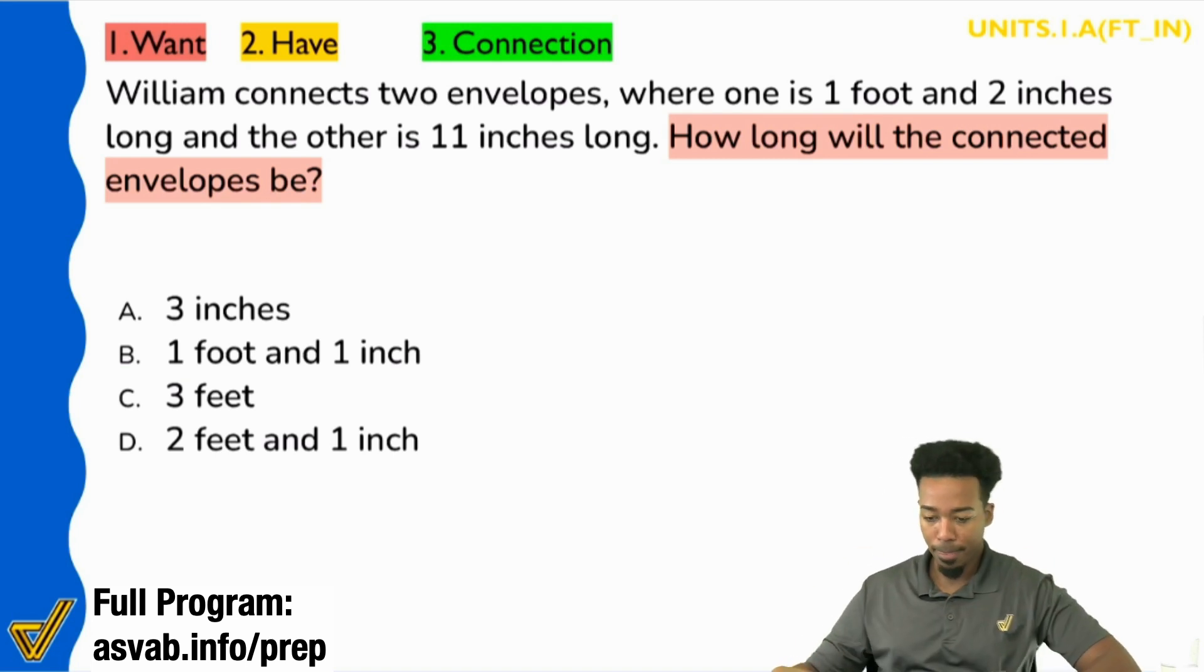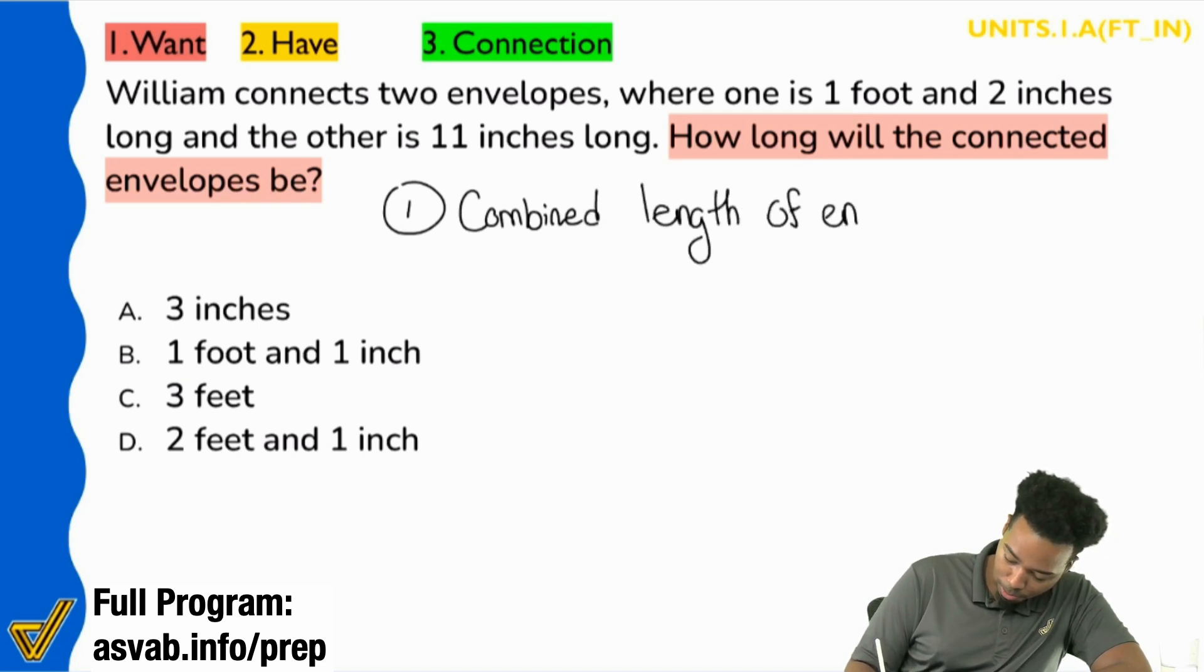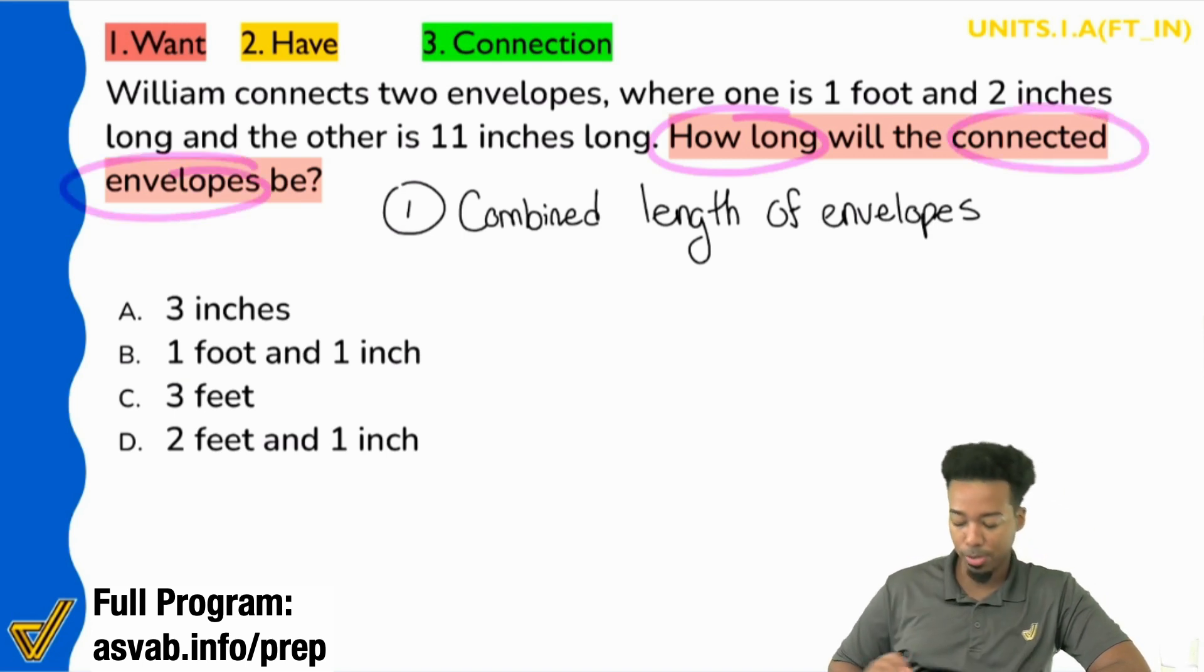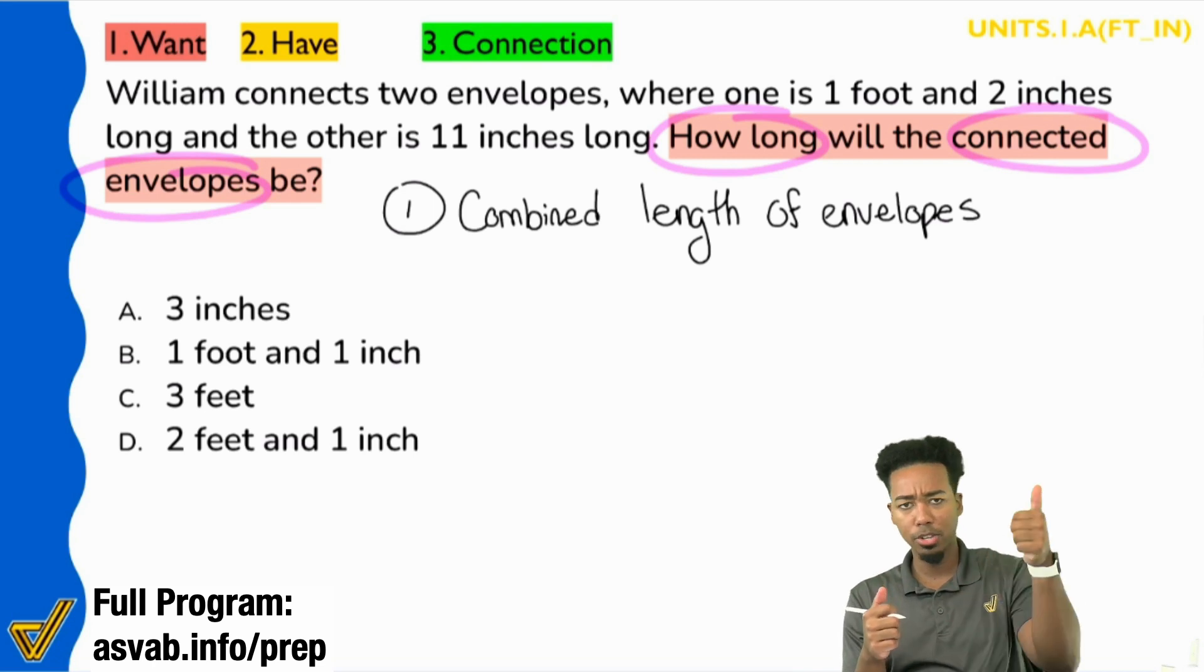So let's write that out. Step number one, what we want is the combined length of the envelopes. Because again, what we want is how long will the connected envelopes be? Connect them, add them. Boom. Everybody, yes or no, are we good to go on that? We need to add these two lengths together.